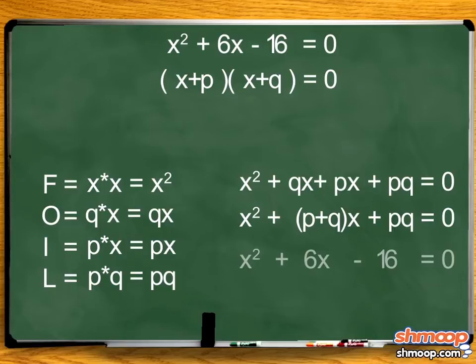Let's look at our original equation to compare. We can see that p plus q equals 6, and p times q equals negative 16.